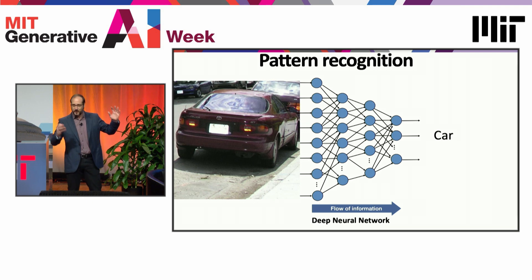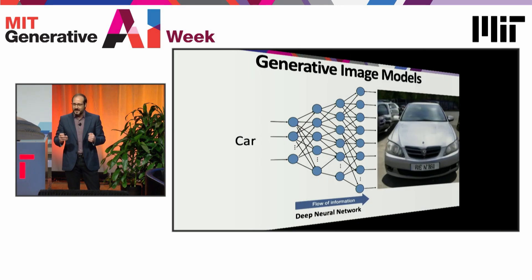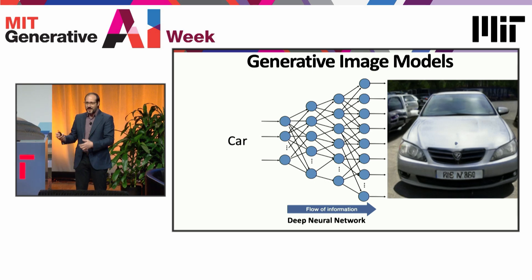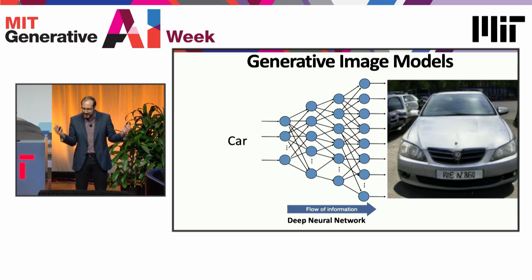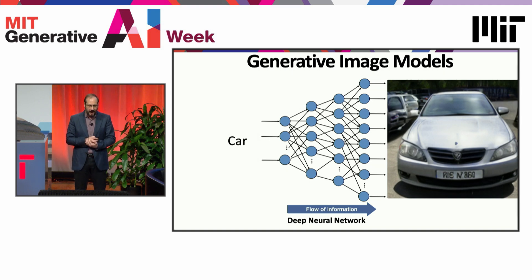You start with a picture where the flow of information goes from the image to the label, and generative AI is about reversing this — going from the label to the image. So if the system is capable of rendering such a beautiful image, it must know about license plates and windshields and mirrors and wheels, even though no one actually taught it what those things are.